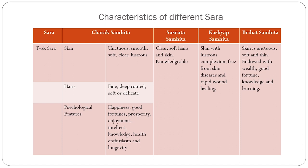In the psychological features of Tvak Sara individuals, Acharya Charak has said they are endowed with happiness, good fortune, prosperity, enjoyment, intellect, knowledge, good health, enthusiasm, and longevity. The shloka in Vimanasthana reads: Sukha-Sobhagya-Aishwarya-Upabhoga-Buddhi-Vidya-Arogya-Prahasha-Ayusha. He has clearly demarcated the physical characteristics as well as the psychological features of a Tvak Sara individual.